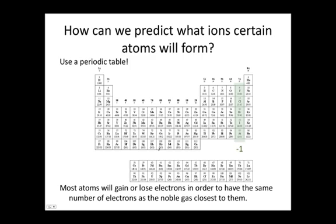As we move over to the right side of the periodic table, we know that atoms in the seventh group will want to gain electrons in order to have the same number of electrons as the noble gas closest to them.